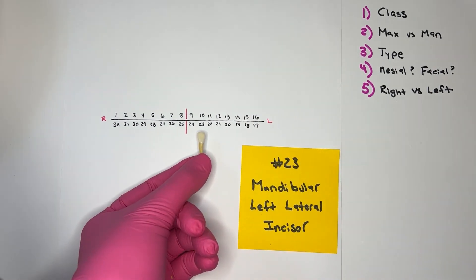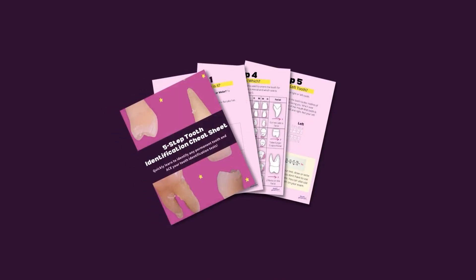The mandibular left lateral incisor. Want a copy of the cheat sheet that goes over these five steps in great detail?